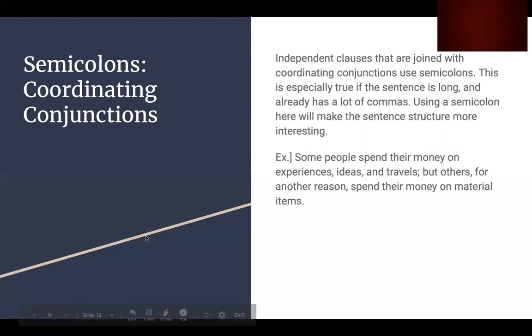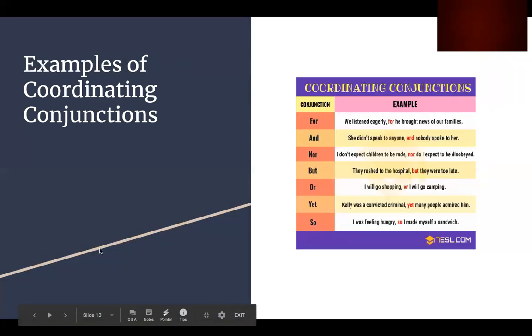Semicolons can also be used for coordinating conjunctions. Independent clauses that are joined with a coordinating conjunction, also known as a FANBOYS, which we will go into depth later, use semicolons. This is especially true if the sentence is already long and has a lot of commas. When we use a semicolon here, it will make this sentence structure more interesting. For example, some people spend their money on experiences, ideas, and travels. But others, for another reason, spend their money on material items. As we can see, the semicolon comes right before the coordinating conjunction. These are examples of the coordinating conjunction.